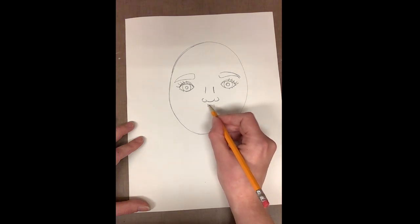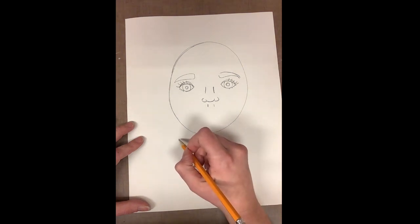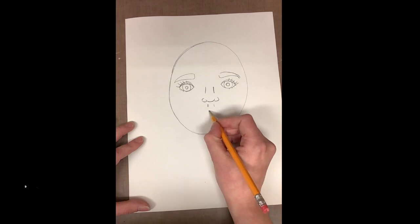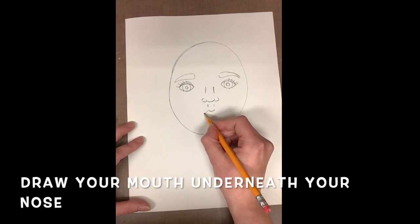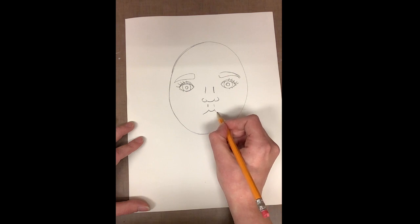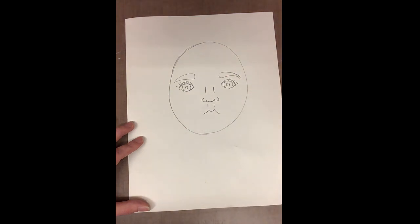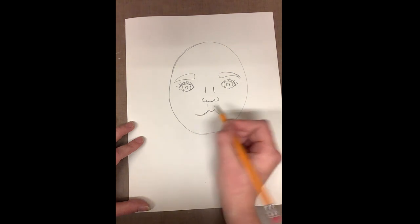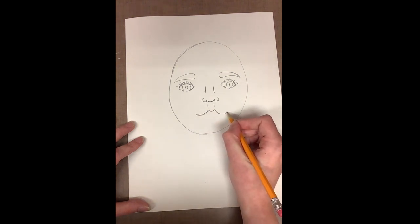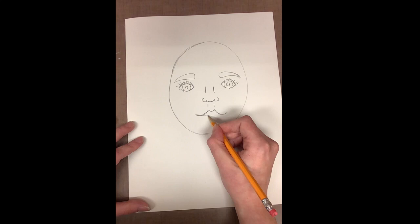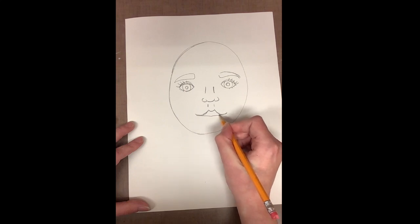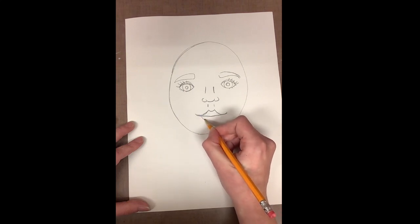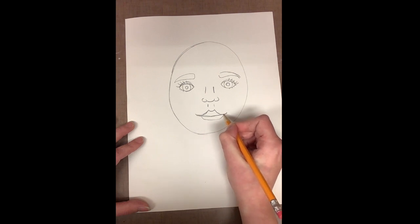Now it's time to draw the mouth. To draw the mouth, I'll put two lines underneath my nose for that little dip that's above your mouth and then I'll start to draw the top lip. The top lip kind of looks like the letter M. I'll draw a line in the center for where my lips come together and then a curving line underneath that for the bottom lip.